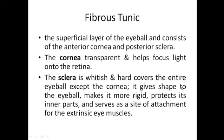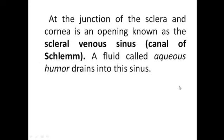The superficial fibrous tunic consists of the anterior cornea and the posterior sclera. The cornea is transparent to help focus light onto the retina. The sclera is whitish and covers the entire eyeball except at the cornea; it gives the eyeball its shape, makes it more rigid, protects the inner parts, and serves as a site of attachment for the extraocular muscles. At the junction of the sclera and cornea, there is an opening called the canal of Schlemm, or scleral venous sinus, through which the aqueous humor drains.